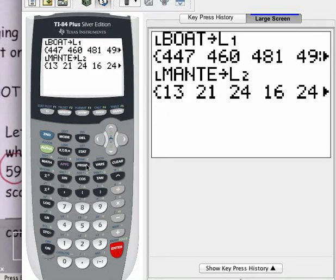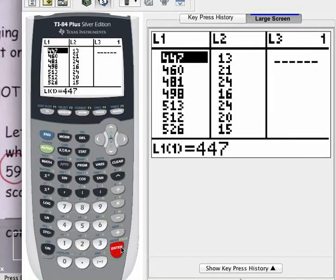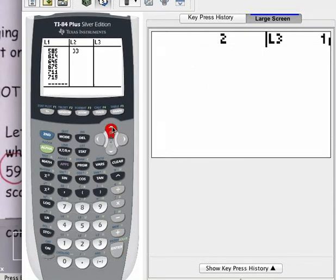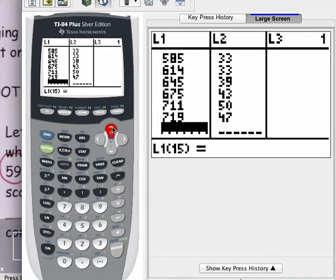So I'm going to press stat and enter, and I'm going to go in, and we are going to add a value to this data set. So I'm going to press the up arrow twice, and we'll go back to the bottom of the list.